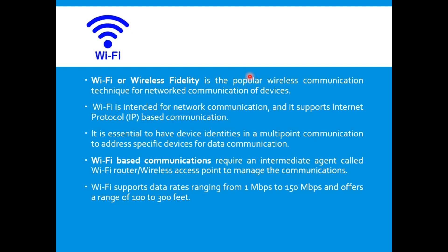Wi-Fi communication requires an intermediate device called a Wi-Fi router, also known as an access point. The Wi-Fi router is responsible for restricting access to a network, assigning IP addresses to devices, and routing data to the intended device on the network.